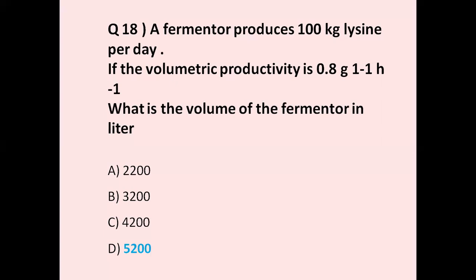Question number 18: A fermenter produces 100 kg of product per day. If the productivity is 0.1 g/L/h, what is the volume of the fermenter in liters? The correct answer is option D, 5200 liters.